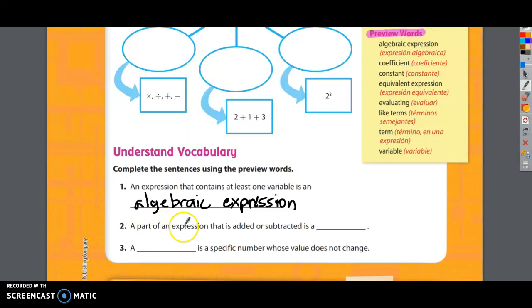All right, moving on. Number 2, a part of an expression that is added or subtracted is a term. It's just a number that we add or subtract is called a term. Number 3, a constant is a specific number whose value does not change. Well, if it doesn't change, that means it's constant. These were meant to be preview words, which means you're not expected to be masters at these yet. We're going to go over these terms in Module 10. But you don't have to master them yet. Okay, good job. You're done with the two first pages of the lesson. You're done with page 258 and 259.